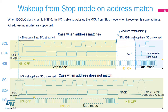Clock stretching must be enabled because the I2C peripheral stretches the clock line low after the start condition until the high-speed internal oscillator is started. After having received an address that matches the programmed slave address, the I2C peripheral also stretches the clock line low until the STM32G4 device is awakened.